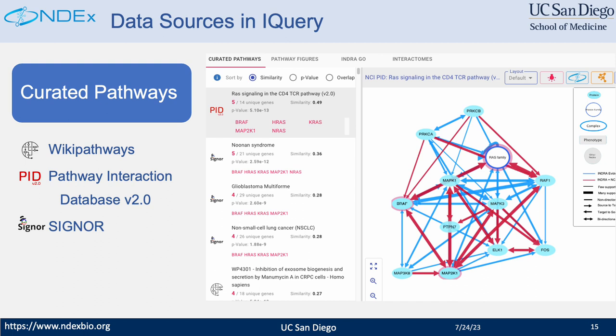The curated pathway tab aggregates curated pathways from multiple sources. We worked together with the BKey Pathways project and included 675 curated human pathways and 11 cancer hallmark networks into iQuery. Pathway Interaction Database is a dataset that has been maintained by us — it was originally created by NCI and contains about 200 manually curated human pathways.